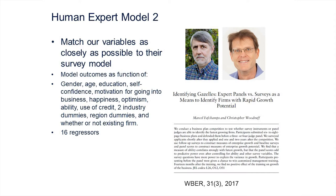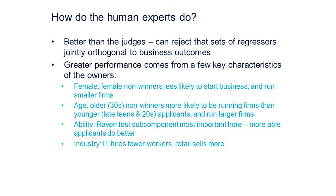The economist model does better than the judges. Simple things correlate: female non-winners are less likely to start businesses and run smaller firms; people in their 30s do better than those in their 20s; cognitive ability from the Raven test score is the most important predictor; and tech firms hire fewer people than more labor-intensive firms. There's some predictive power, but it's pretty low.